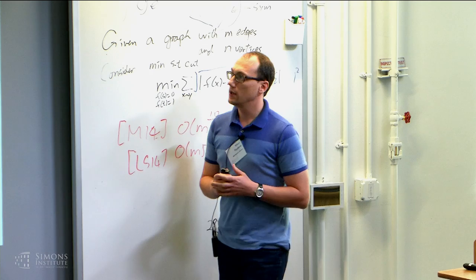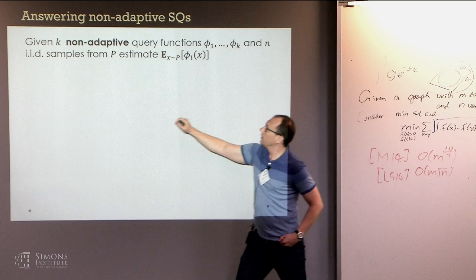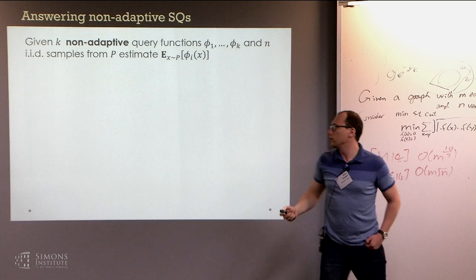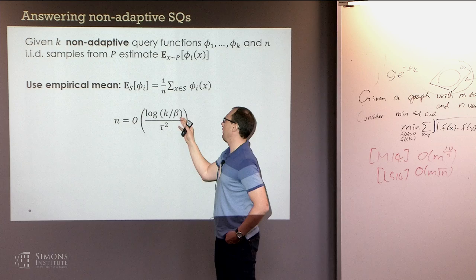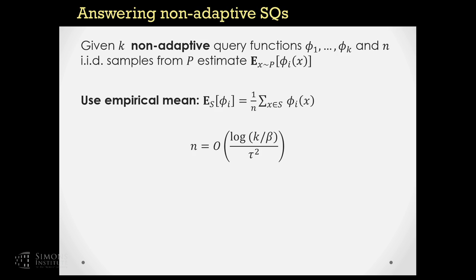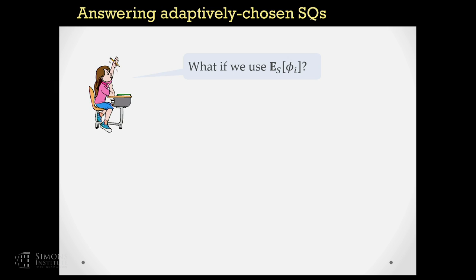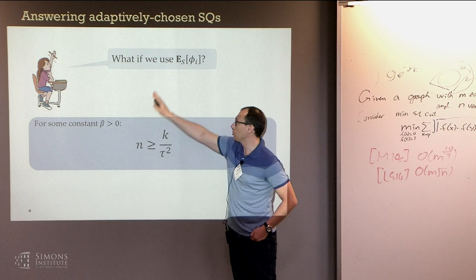Let's start with a quick warm-up. In the non-adaptive setting where you are given K fixed functions, all with range between 0 and 1, the goal is to estimate the expectation of all of them. Using the empirical mean plus a standard Chernoff and union bound argument, the number of samples needed to get an estimate within tau with confidence 1 minus beta is something like log(K)/tau² — it grows very mildly with K. Now in the adaptive version, if you use the same approach of answering with the empirical mean, there are sequences of queries such that the number of samples required is at least K/tau².